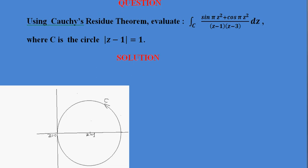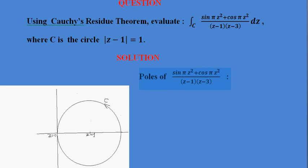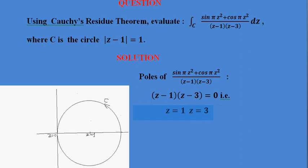Now, first we have to find the poles of the integrand function. To find poles, we set the denominator equal to zero. Setting (z−1)(z−3) = 0, we get z = 1 and z = 3. Since neither value repeats, z = 1 and z = 3 are both simple poles.